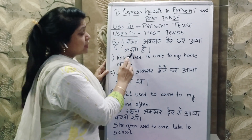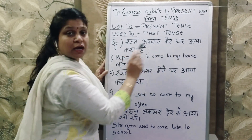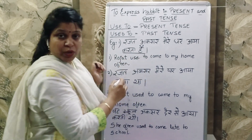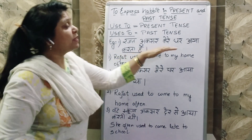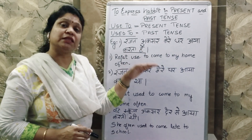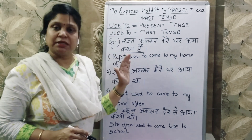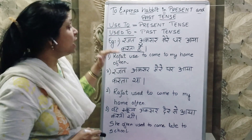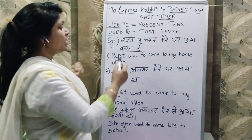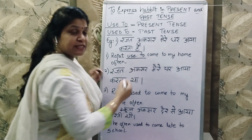Example — this is an example of present tense. 'Rajat aksar mere ghar aya karta hai.' Karta hai yahan pe aadat ko show karna hai. Agar present simple tense me hum chalte hain, toh hum kehte hain 'Rajat aksar mere ghar aata hai.' Lekin tab aadat show nahi hoti — ye simple present tense man jata hai. Lekin 'aya karta hai' yeh aadat ko show karna wala sentence hai. Yahan hum 'used to' lagayenge present tense ke liye.